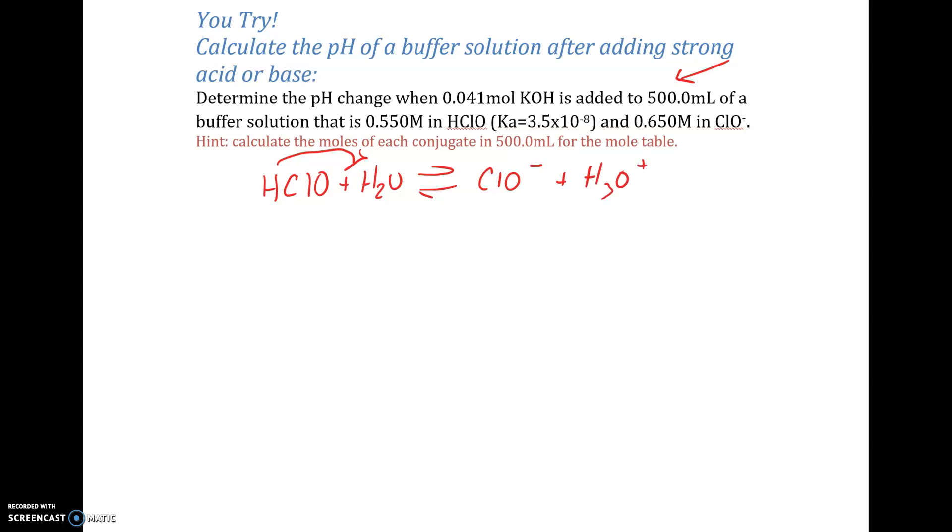We're looking for a pH change. So we need to know the pH before we add this strong base and the pH afterwards. We have molarities here, so I can just write them up here. That's 0.550 molar and the ClO- is 0.650 molar. I can calculate my initial pH with the Hasselbalch equation. So I have a pKa of 7.46. That's the negative log of the Ka, which is 3.5 times 10 to the minus 8, plus the log of your base over your acid. Again, this can be in molarity or in moles. We have molarity, so we'll use that. So our pH before is 7.53.